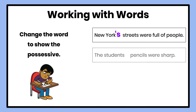Let's try another one: The students' pencils were sharp. If I want to add something to the word students to make it a possessive of pencils — to show that they own the pencils — what would I do? It already ends in an S, so I'm going to leave the S there and add an apostrophe after the S. Remember, when our word ends in S, we don't want to add an additional S. The apostrophe is now making it so that the pencils belong to students — students is possessive.